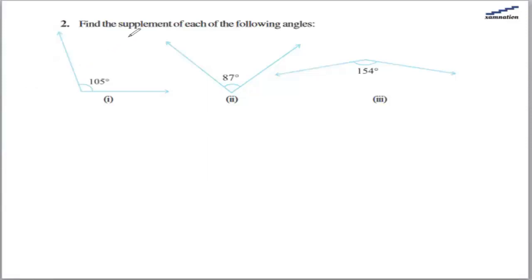In this question, we are going to find the supplement of each of the following angles. So what is the supplement of an angle? Supplement of an angle means that if the angle given is x, its supplement will be 180 minus x. Basically, the angle and its supplement, the sum of both of these will be 180 degrees.